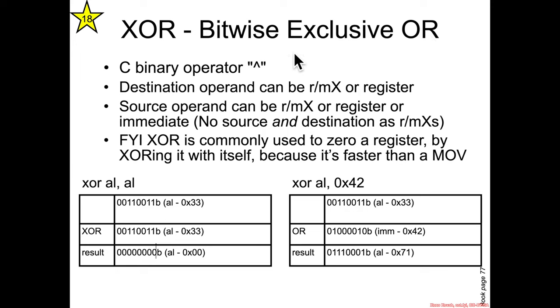XOR exclusive OR is represented in C as the caret symbol and once again source and destination same forms as the AND and OR.